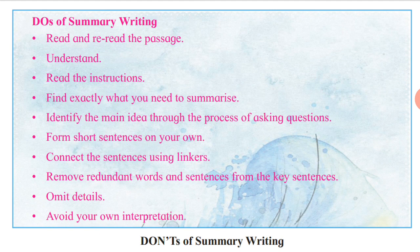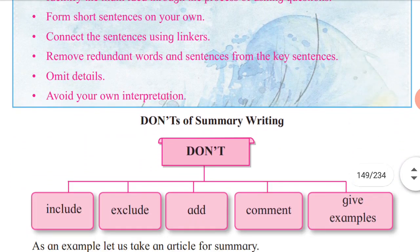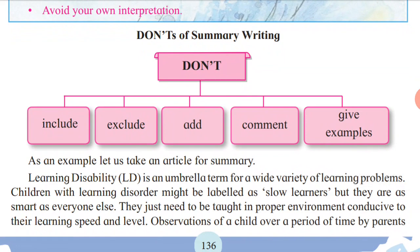Connect the sentences using linkers. Remove redundant words — the words which are not required — from the key sentences. Omit the details, such as examples, dates, and numbers; only pick up the main sentences and frame them in your own words. Avoid your own interpretation — you don't give your own interpretation of the passage. What you are not supposed to do: do not include any information other than what is given in the passage, do not exclude important information, do not add your own comments or opinions, and no need to give examples.